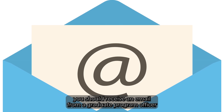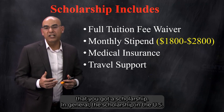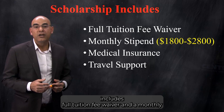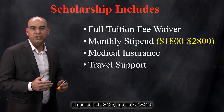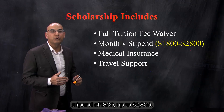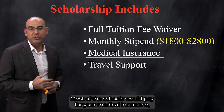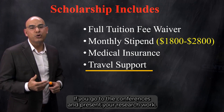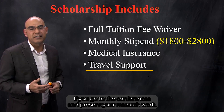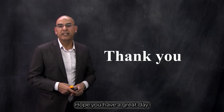Usually one to two months after your application submission you should receive an email from a graduate program officer or graduate school informing you that you received a scholarship. In general, scholarships in the US include a full tuition fee waiver and a monthly stipend of $1,800 up to $2,800. Most schools would also pay for your medical insurance, and some schools would pay for travel support if you go to conferences and present your research work. Thank you very much for listening. Hope you have a great day.